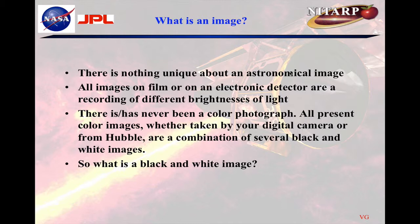What is an image? There's nothing unique about an astronomical image. All images on film or on an electronic detector are a recording of different brightnesses of light, and that's what we experience at any time, whether we watch it on television or photograph. All of those are basically different brightnesses of light recorded in one form or another.